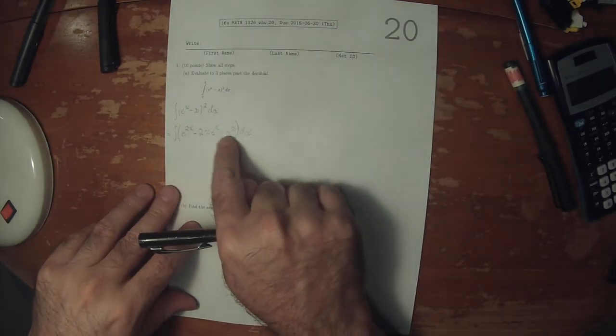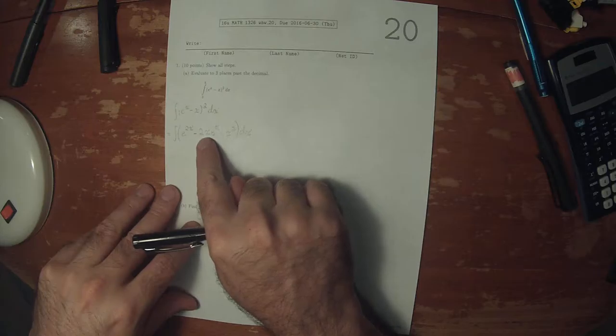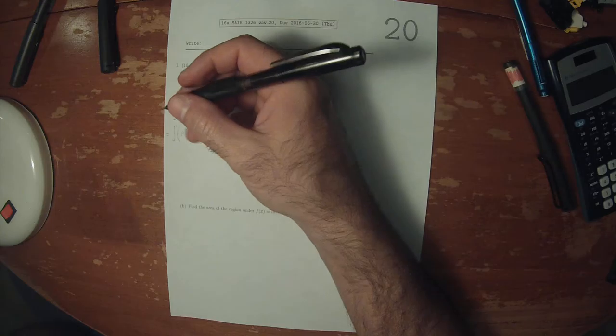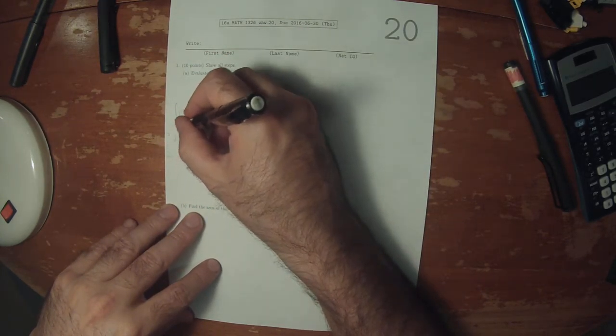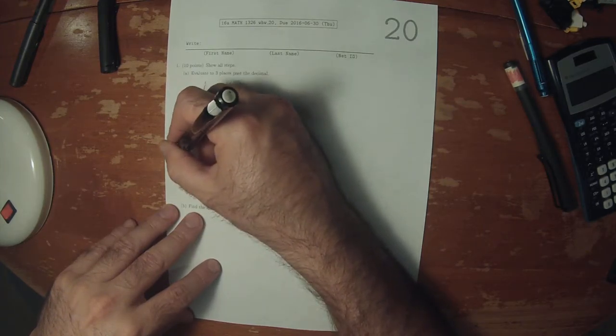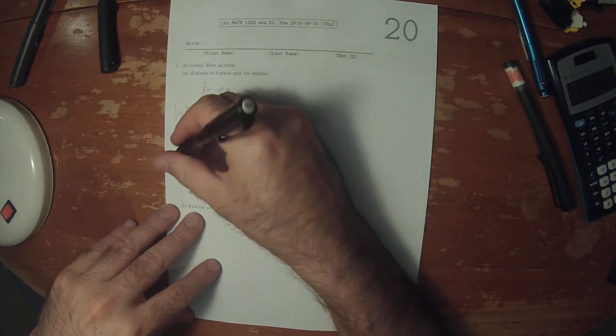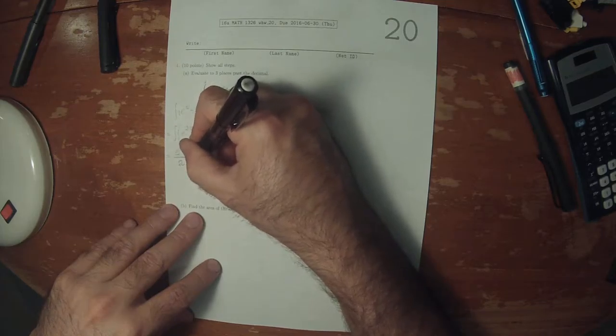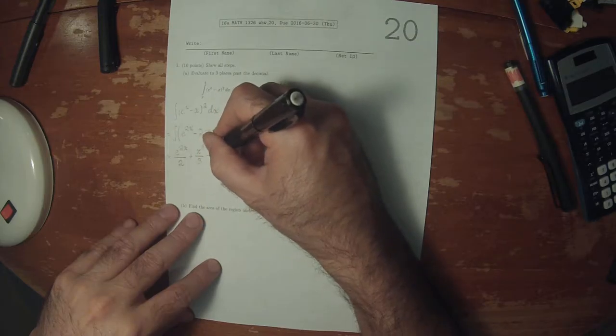Two of these three terms are quite easy to deal with, and this term in the middle requires by parts. So this term antidifferentiates to e to 2x divided by 2, this term antidifferentiates to x to 3 over 3, and this term in the middle becomes, I'll factor out the 2 and then get x e to x dx.